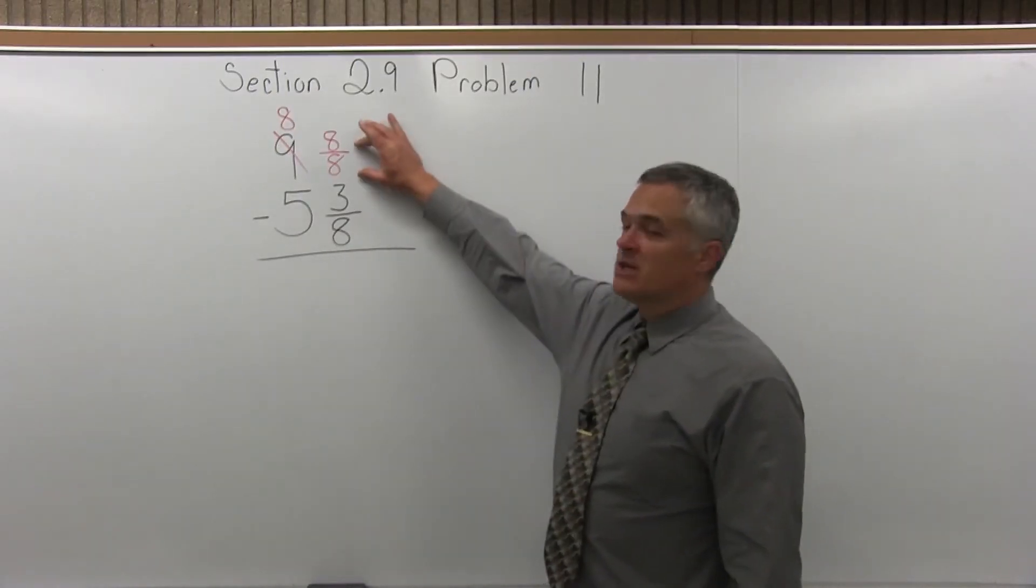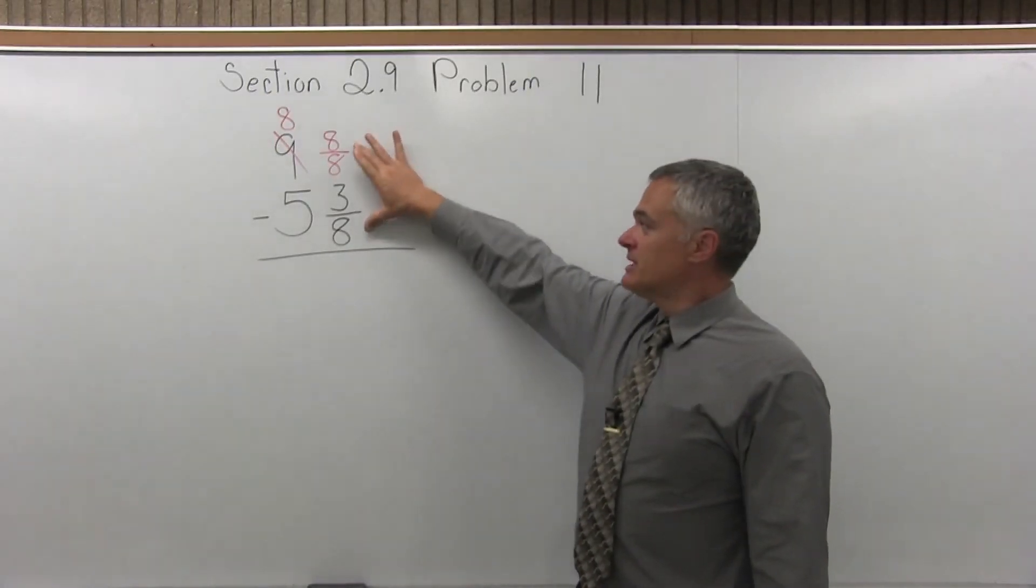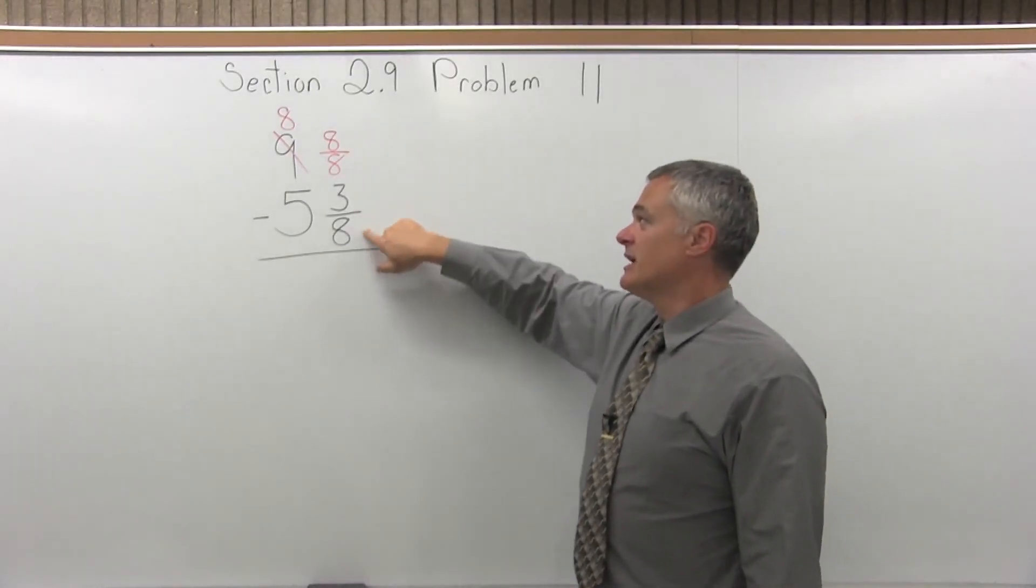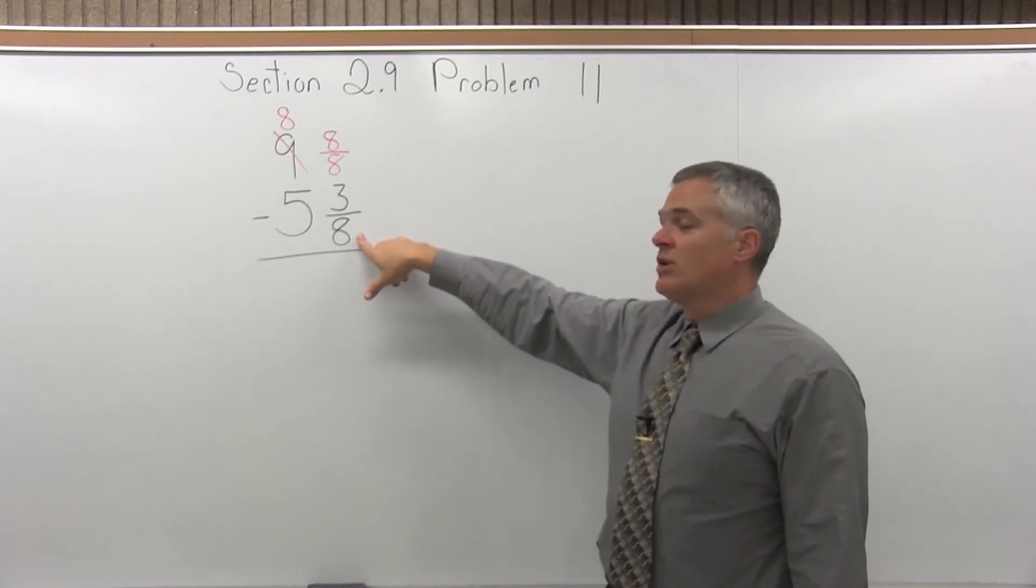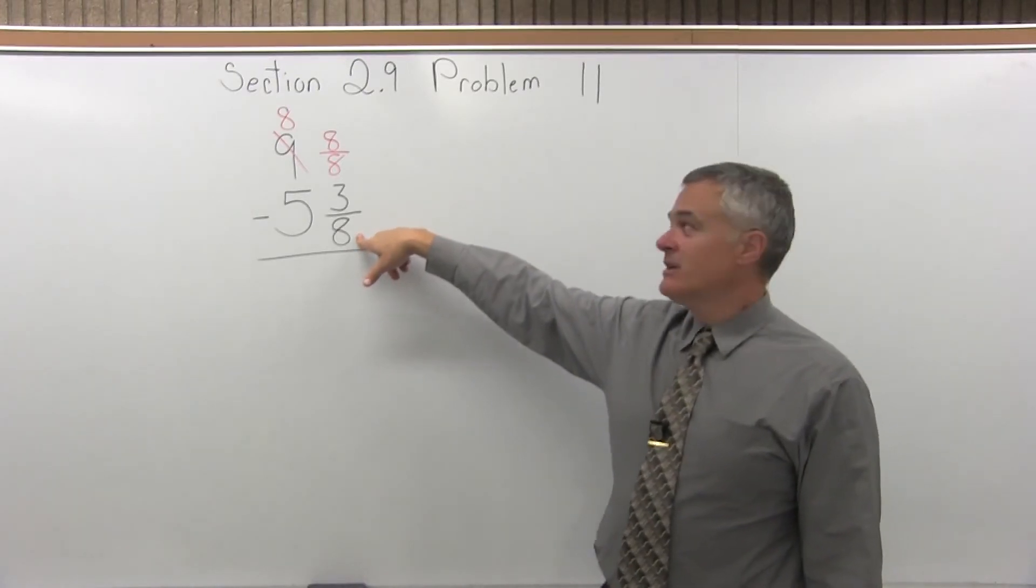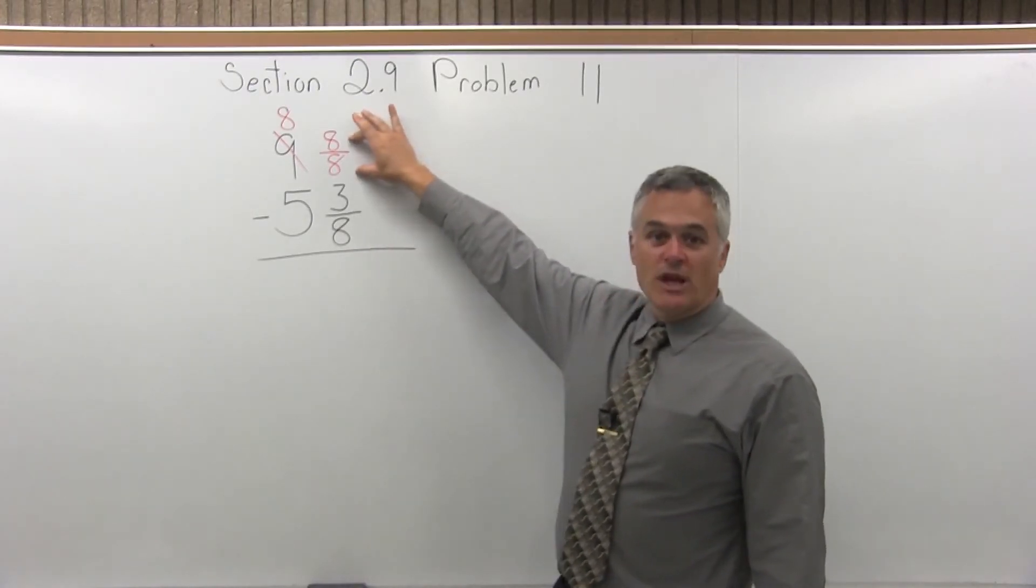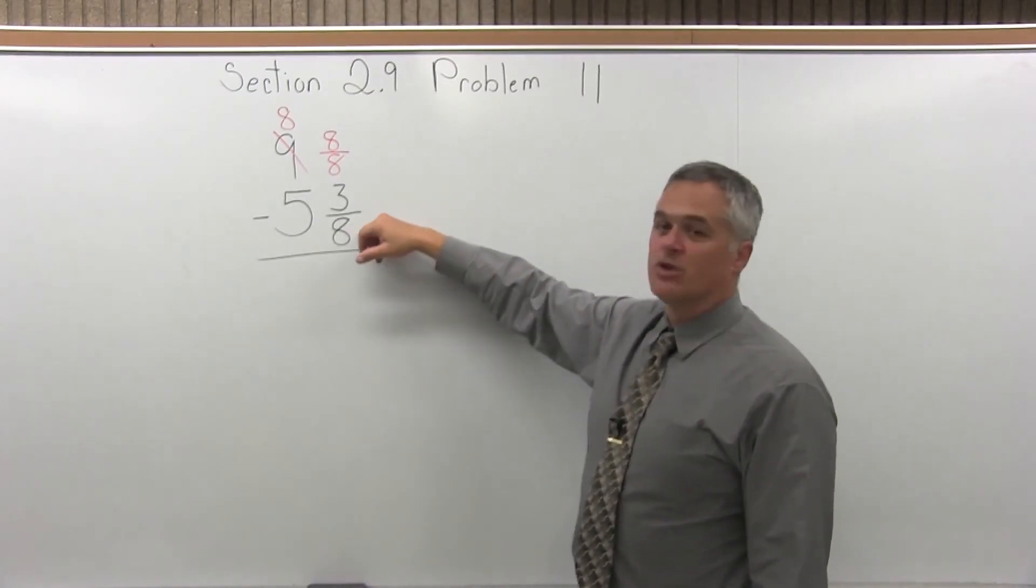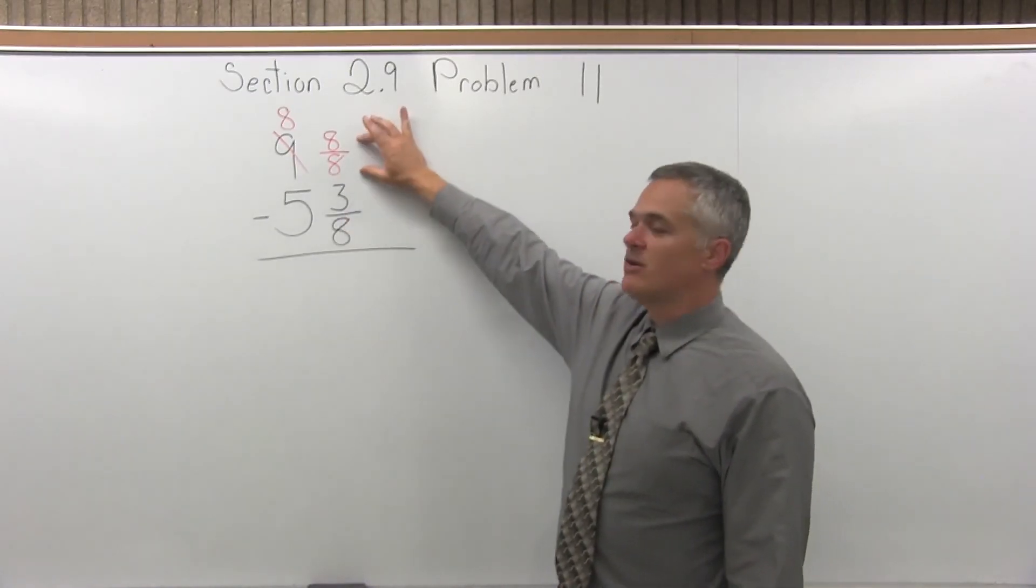I chose to make the fraction part 8 over 8 because I wanted to match the denominator of the lower fraction, which has a denominator of 8. So if the denominator in the lower fraction was say 11, I would have made this 11 over 11. It's a 1 and you want a common denominator. So since I started with a denominator of 8, I want to match it 8 over 8.